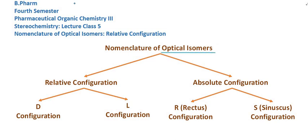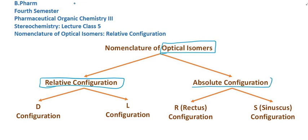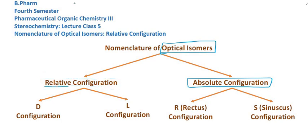Here we are going to discuss optical isomers and the nomenclature system, specifically relative configuration and absolute configuration. We are going to focus on the relative configuration first.